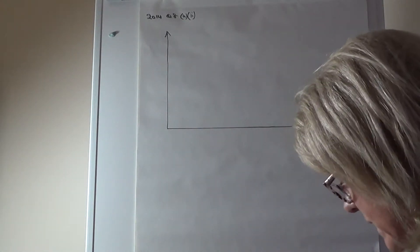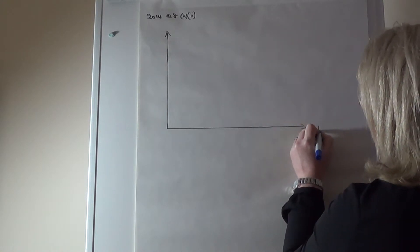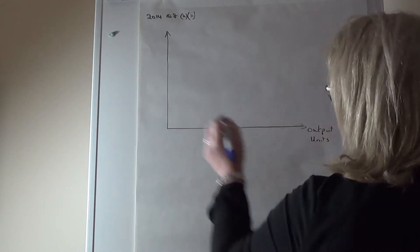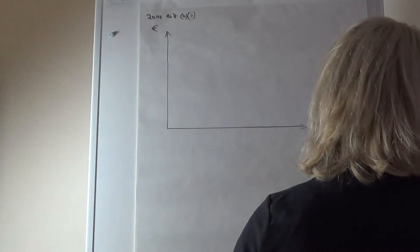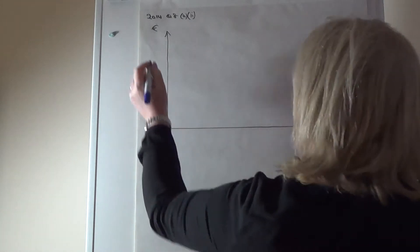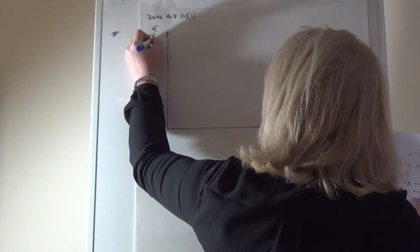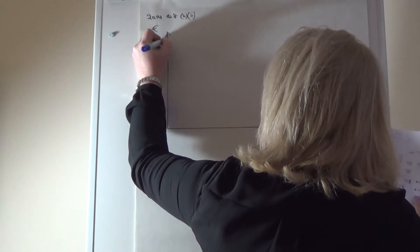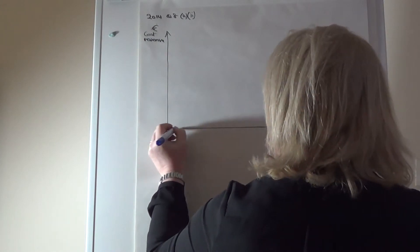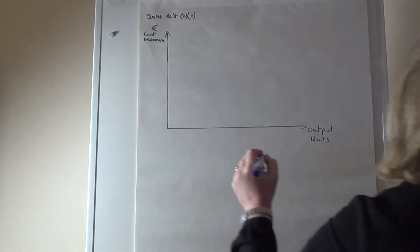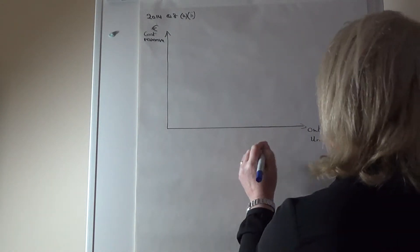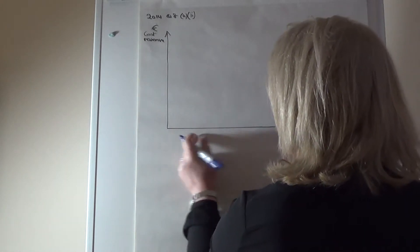On the x-axis you want to show the output or units, and on the y-axis you want to show the cost and revenue. In terms of points to use: the break-even was at 8,843 units, so I want that somewhere in the middle.